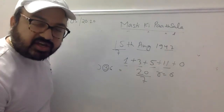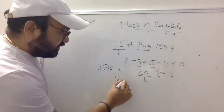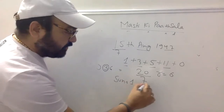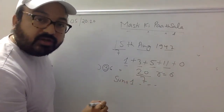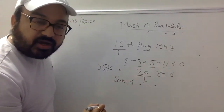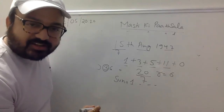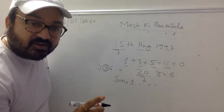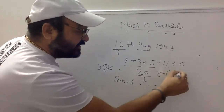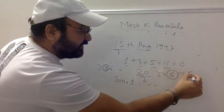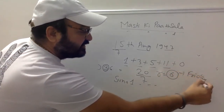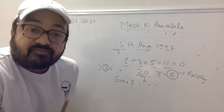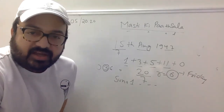6 कौन था? Sunday को 1, Monday को 2, Tuesday को 3, Wednesday को 4, Thursday को 5, Friday को 6. तो 15 August 1947 — Friday था! चेक कर लीजिए।